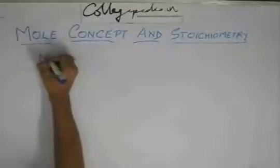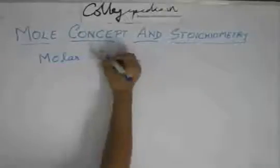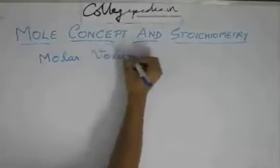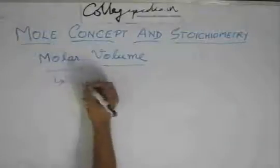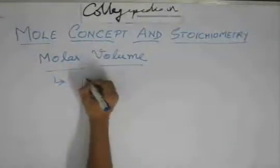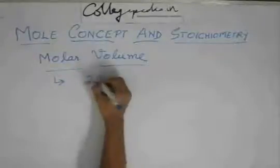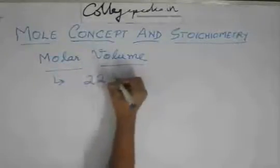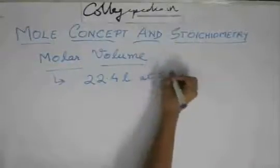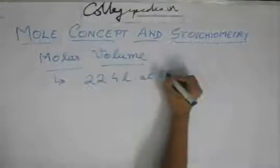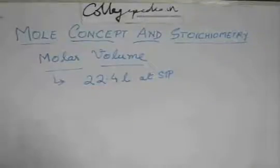We were talking about molar volume and we saw that any gas, irrespective of the nature of the gas, its volume is 22.4 litre at STP - its molar volume. That means the volume of one mole of the gas is 22.4 litre at STP.